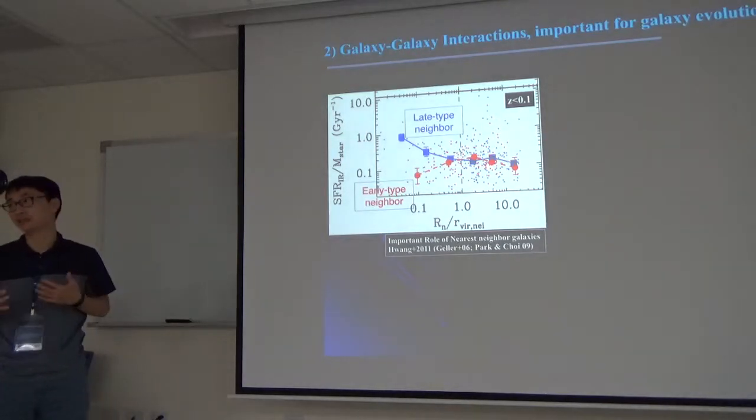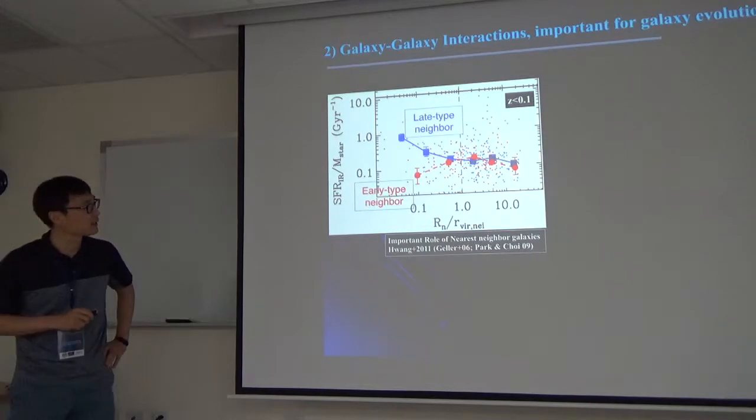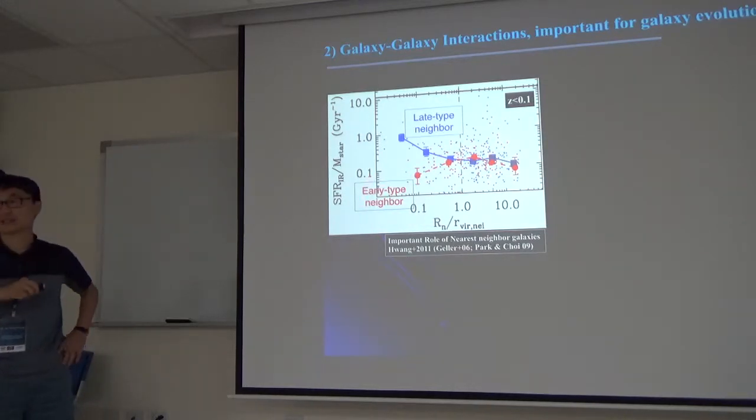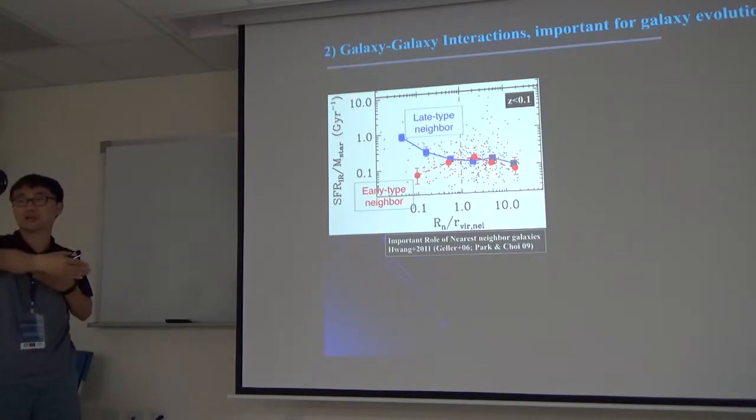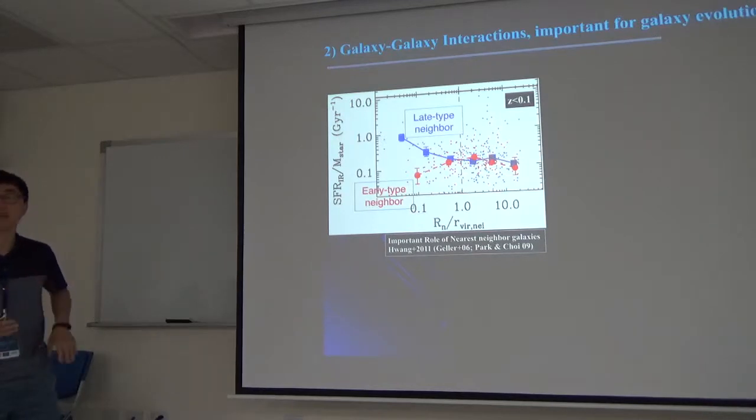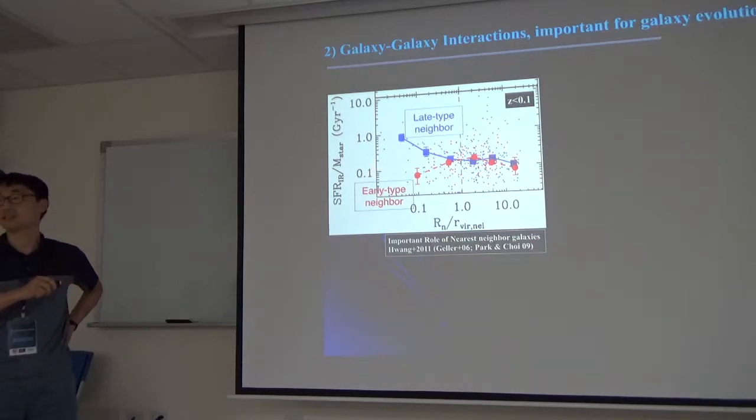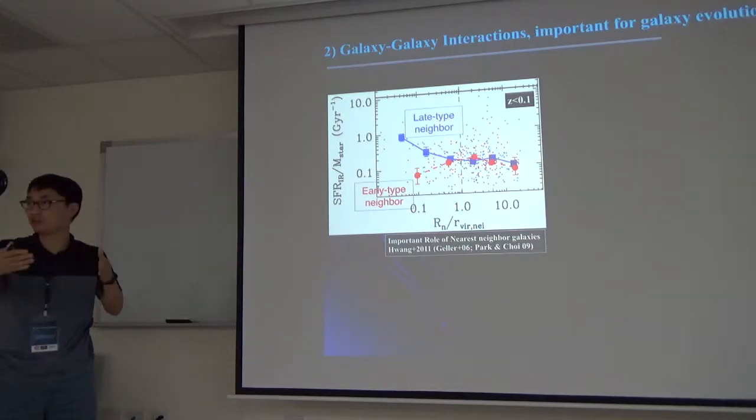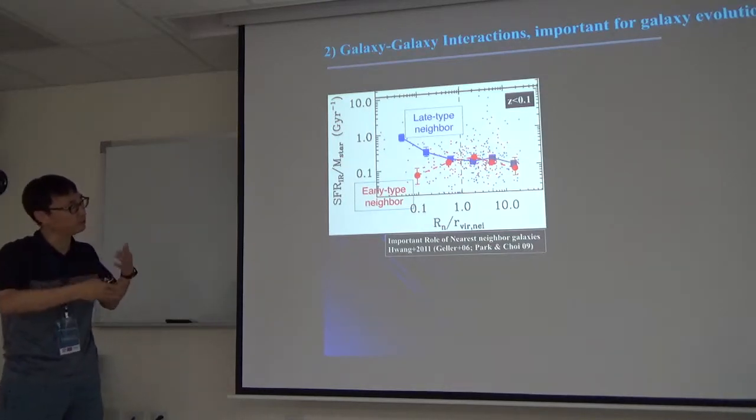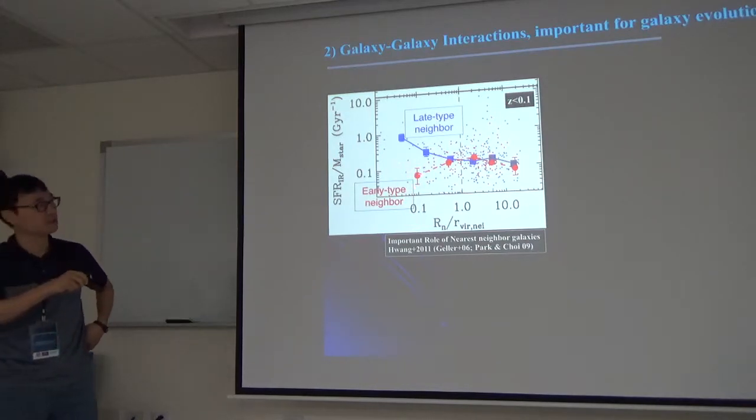The second thing is galaxy-galaxy interaction, which is very important for galaxy evolution. In this case, the y-axis is specific star formation rate of galaxies as a function of distance to nearest neighbors. The question is how your star formation activity changes through the interaction with your neighbors. This can be done with spectroscopic redshifts. The blue symbol is for the case when your neighbor is late-type galaxy.